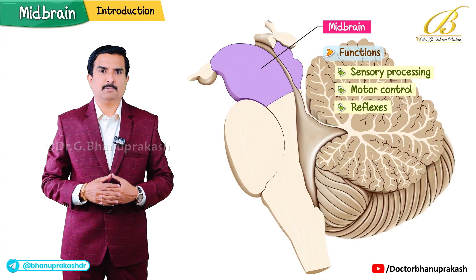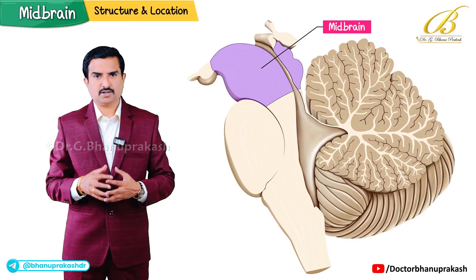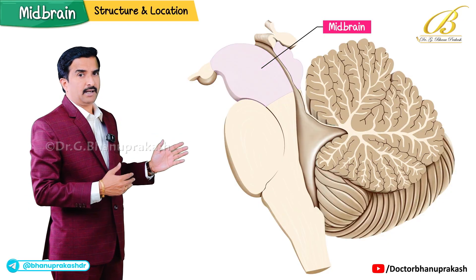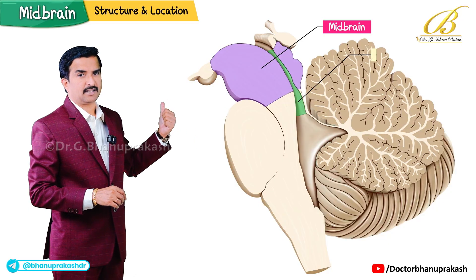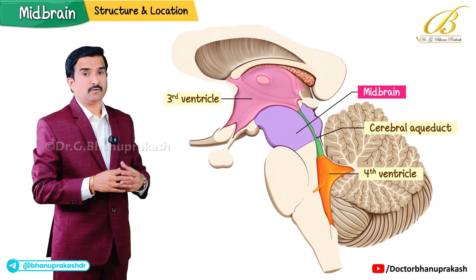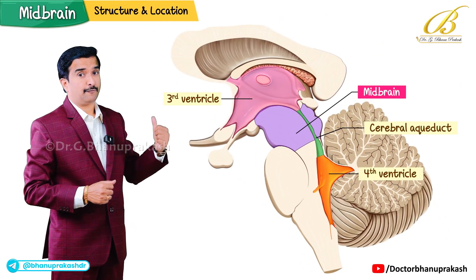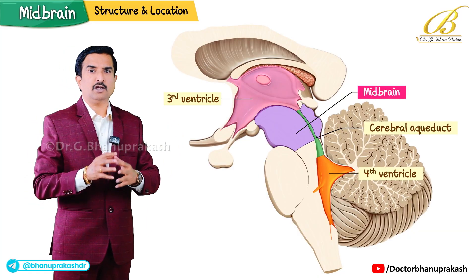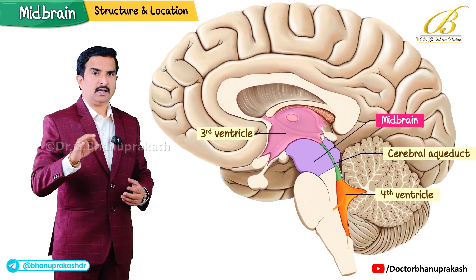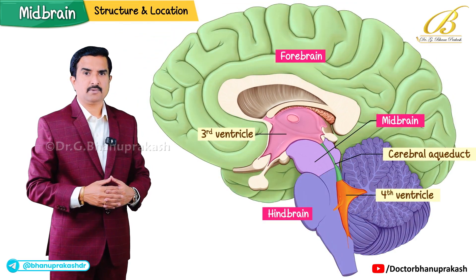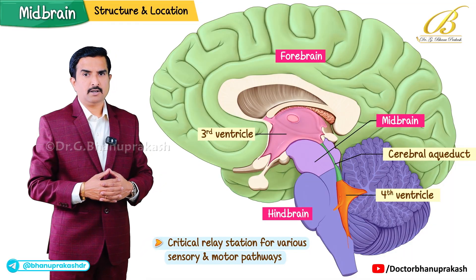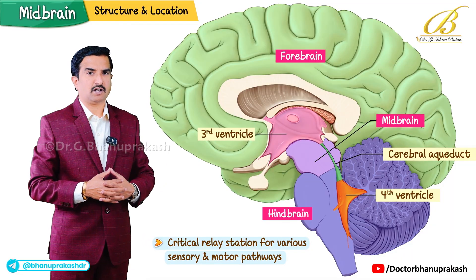The midbrain is located posterior to the cerebral aqueduct, which connects the third and fourth ventricles of the brain, forming the roof of the midbrain. It plays a key role in connecting different parts of the brain, especially the forebrain and the hindbrain, serving as a critical relay station for various sensory and motor pathways.